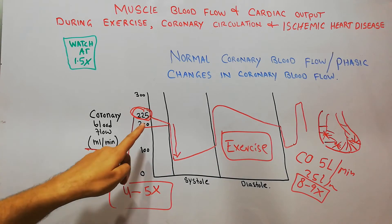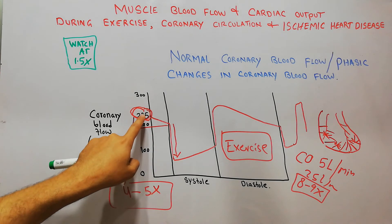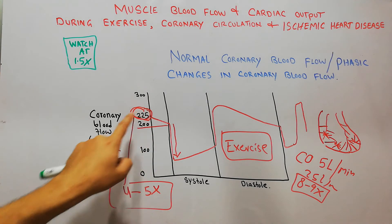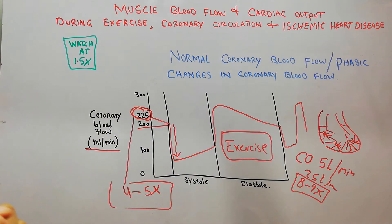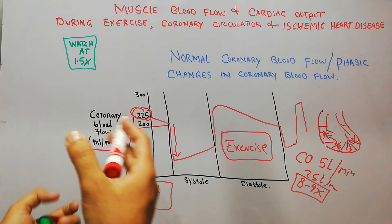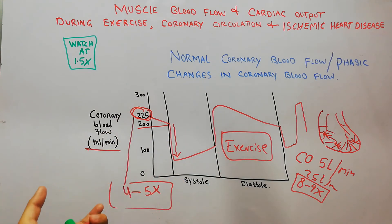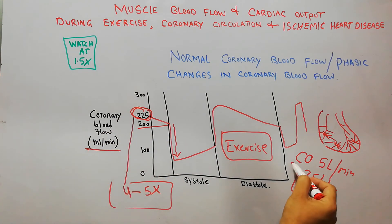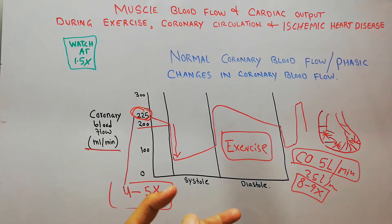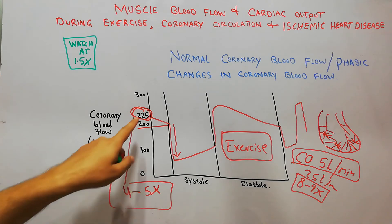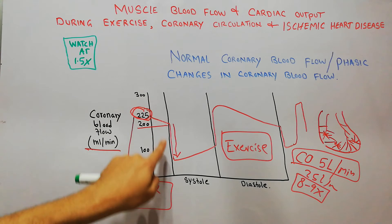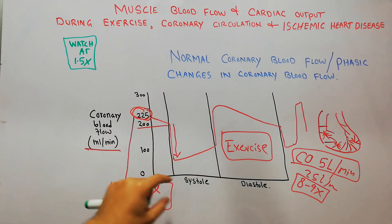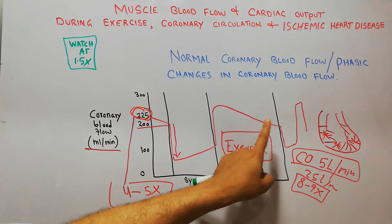During exercise, the normal blood flow to the heart is 225 ml per minute — that is the amount of blood the heart muscle itself receives. This is separate from the cardiac output of 5 liters per minute, which is the blood the heart pumps to the body. The heart is itself a muscle and needs blood for survival, receiving 225 ml per minute, which decreases and increases during systole and diastole even in a normal person.